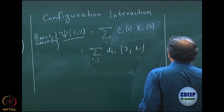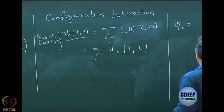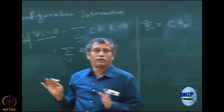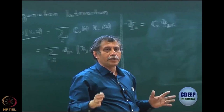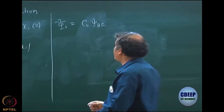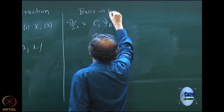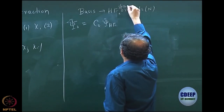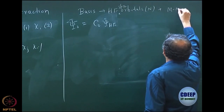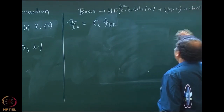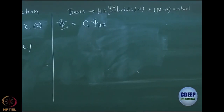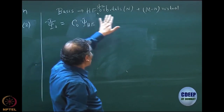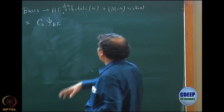For our many-particle problem, an exact wave function psi_0 can be written as a linear combination where the first determinant is Hartree-Fock. The basis of orbitals we use are the Hartree-Fock orbitals plus the virtual orbitals — the Hartree-Fock basis for CI. We have n Hartree-Fock spin orbitals, which are the occupied orbitals, plus m-minus-n virtual orbitals. The quality of the virtual orbitals determines how good the wave function is, but these virtual orbitals are always orthogonal to the n Hartree-Fock orbitals.